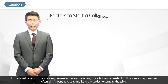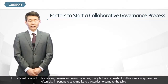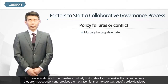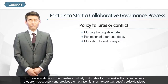In many cases of collaborative governance around the world, policy failures or deadlock with adversarial approaches often play important roles in motivating the parties to come to the table. Such failures and conflict often create a mutually hurting deadlock that makes the parties perceive they are interdependent and provides the motivation for them to seek a way out of a policy deadlock.